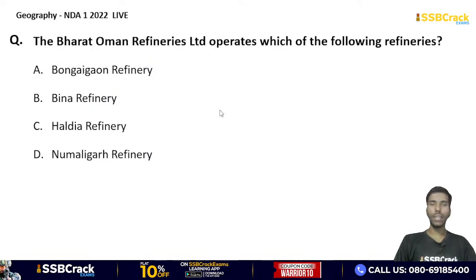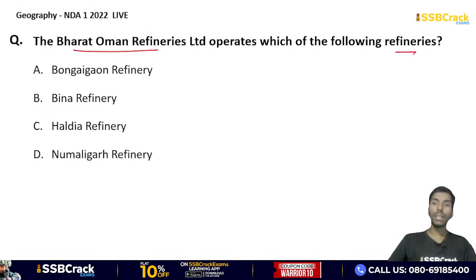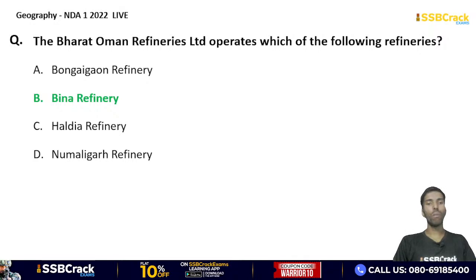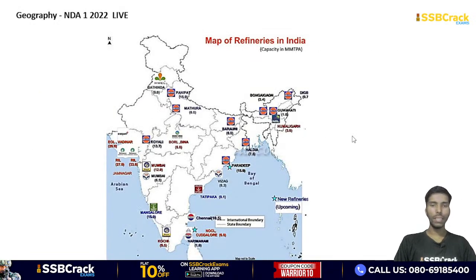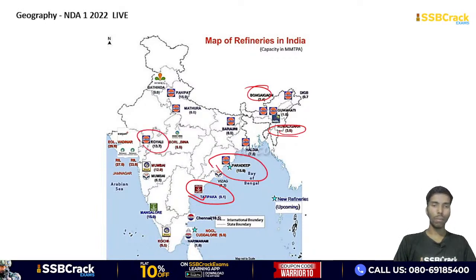Bharat Oman Refineries Limited operates which one of the following refineries? Bongaigaon refinery, Bina refinery, Haldia, or Numaligarh refinery? The correct answer is option B — Bina refinery. Bongaigaon and Numaligarh are in the North Eastern side. Other important refineries include Paradip, Koyali in Gujarat, and Mumbai's JNPT port area.